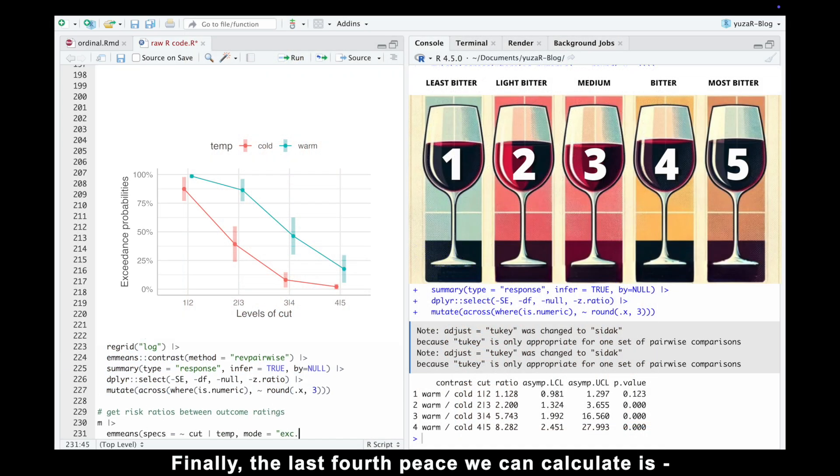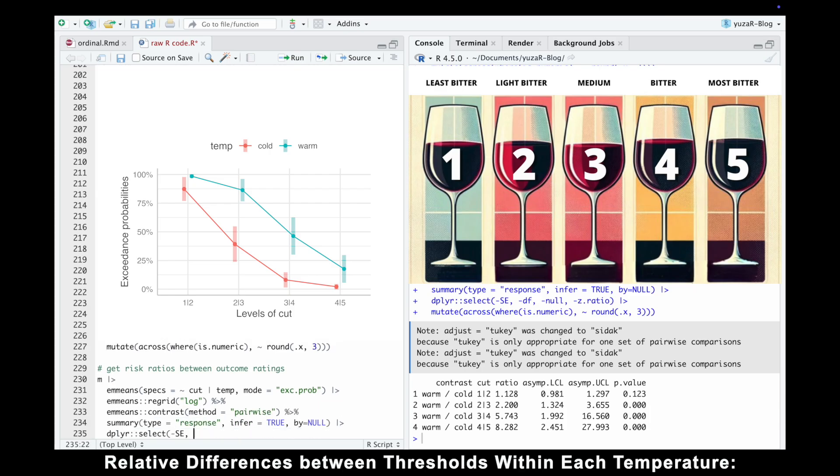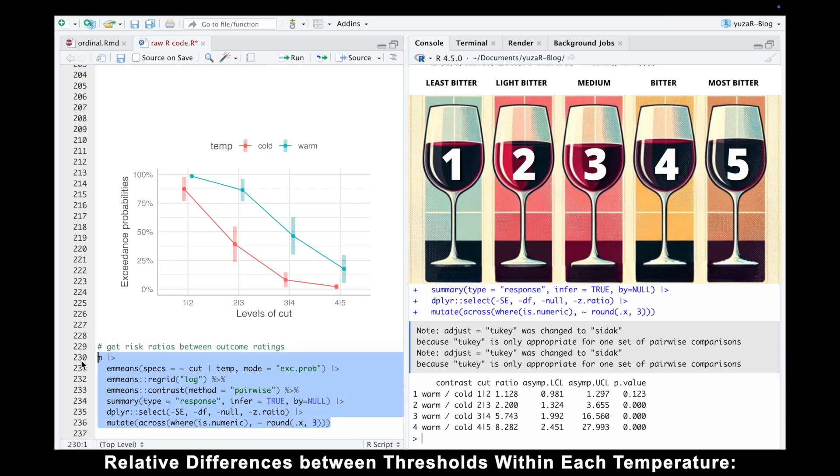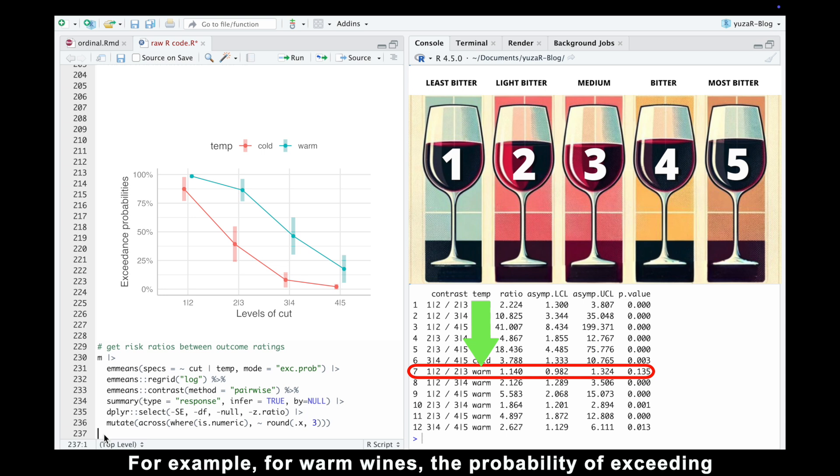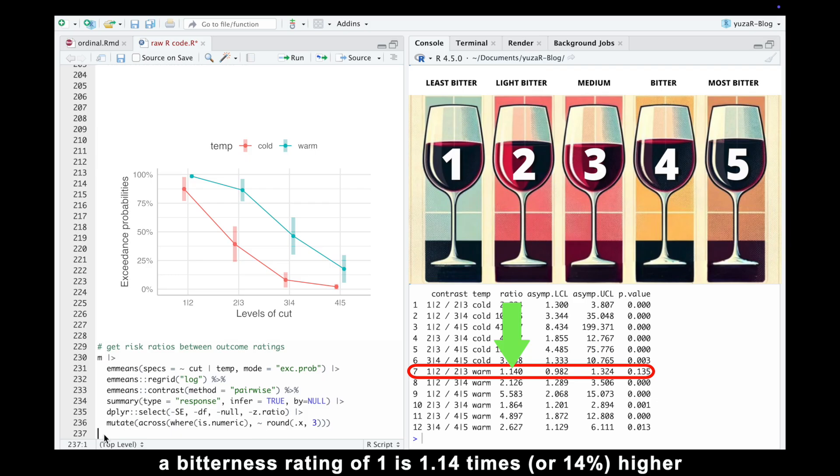Finally, the last piece we can calculate is relative differences between thresholds within each temperature. For example, for warm wines, the probability of exceeding a bitterness rating of 1 is 1.14 times, or 14% higher compared to exceeding a rating of 2.